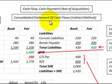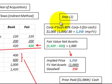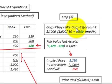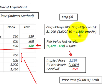Here we're going to prepare a consolidated statement of cash flows using the indirect method, and we're going to go through it step by step. Corporation P is going to buy 80% of Corporation S subsidiary, and they're going to pay $1 million in cash for that 80% interest. That implies the fair value of Corporation S is $1,250,000.